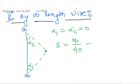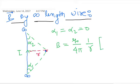Mu naught upon 4 pi. Listen properly and understand this. I is current. And this perpendicular distance — remember that we always have perpendicular distance — perpendicular distance R. So mu naught upon 4 pi, I upon R, and cos 0 plus cos 0, which is two times cos 0.